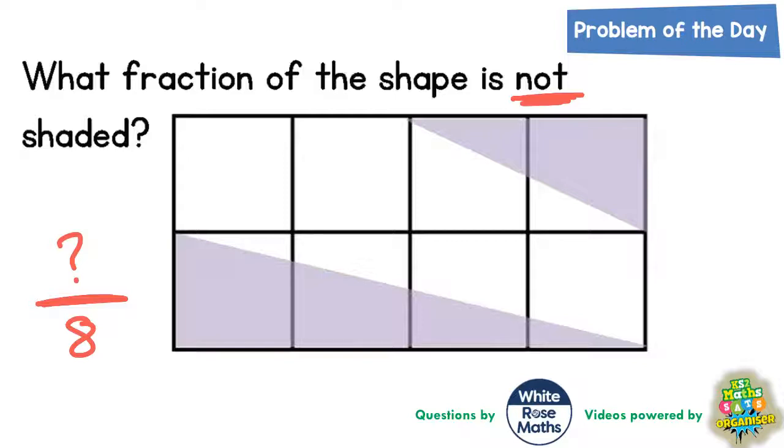One way we could do it is to look at these two squares here. What we've got there is two squares, but if we split it in half then half of those two squares is shaded. So two divided by two, if you split it in half, equals one square.